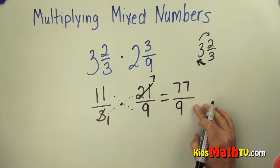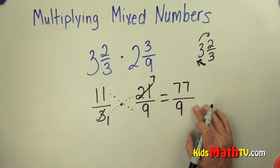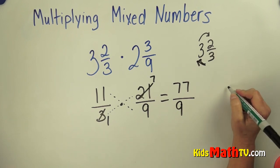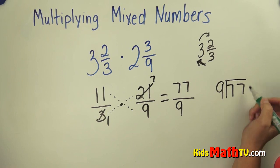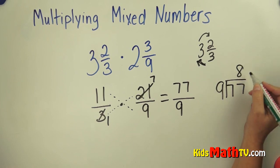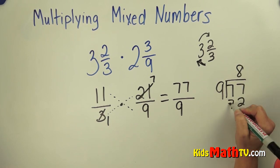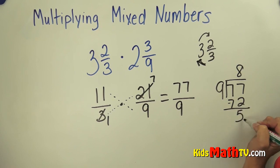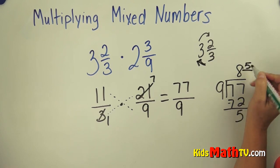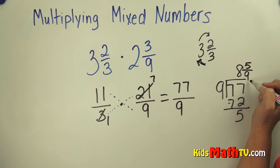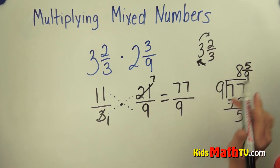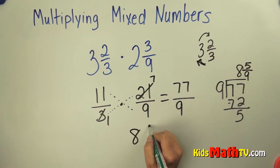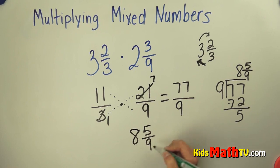Now I have an improper fraction that I simply need to make into a mixed number, and I do that by dividing. 77 divided by 9 — 9 goes into 72, subtract and I get 5. The 5 becomes the numerator and the divisor is the denominator. So 77 over 9 is 8 and 5 ninths.